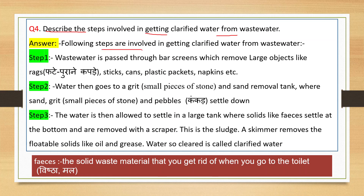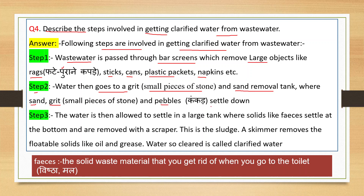Question number four: Describe the steps involved in getting clarified water from wastewater. The following steps are involved. Step 1: Wastewater is passed through bar screens which remove large objects like rakes, sticks, cans, plastic packets, napkins, etc. Step 2: Water then goes to a grit and sand removal tank where sand, grit and pebbles settle down.